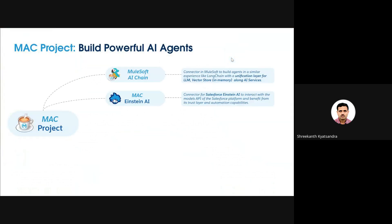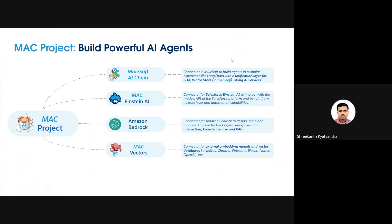Some of the main connectors MAC offers: the MuleSoft AI Chain provides a unification layer for LLM, vector store, and AI services. The MAC Einstein AI connector helps to interact with the Models API of the Salesforce platform and benefit from its trust layer and automation capabilities. Other significant connectors include Amazon Bedrock to talk to Amazon Bedrock agents, their respective knowledge bases, and so on.